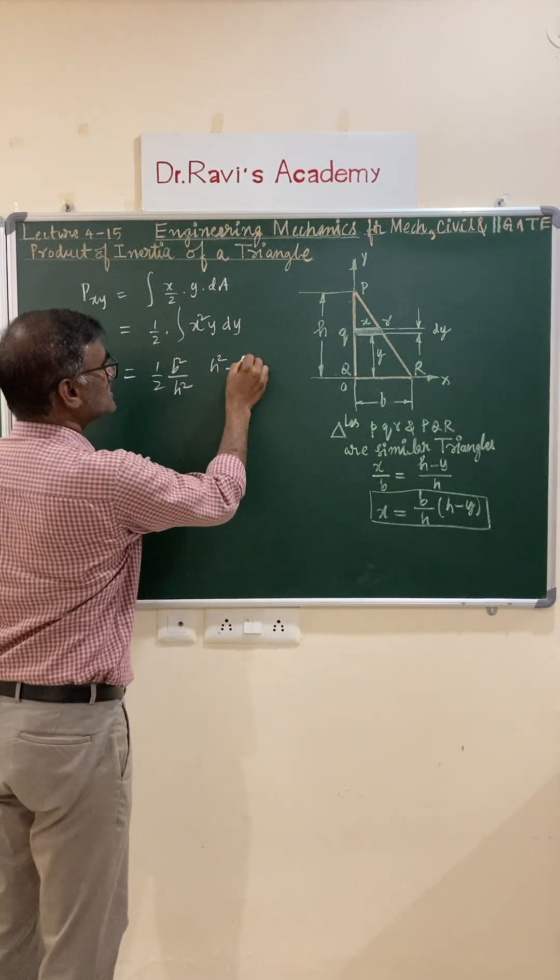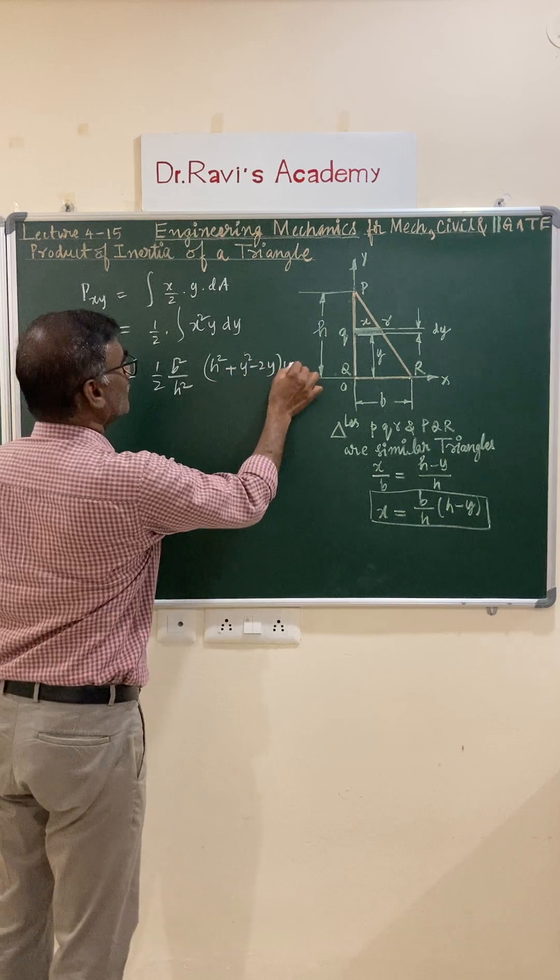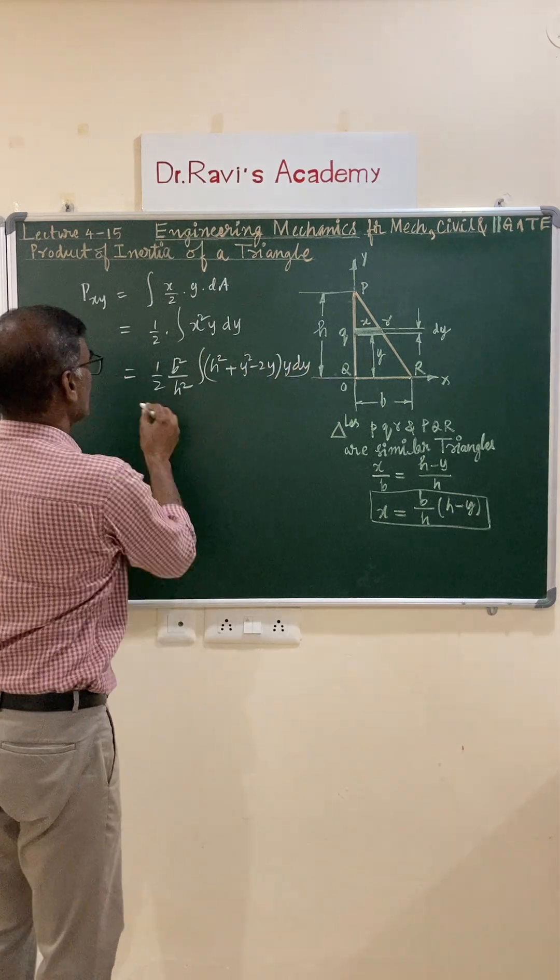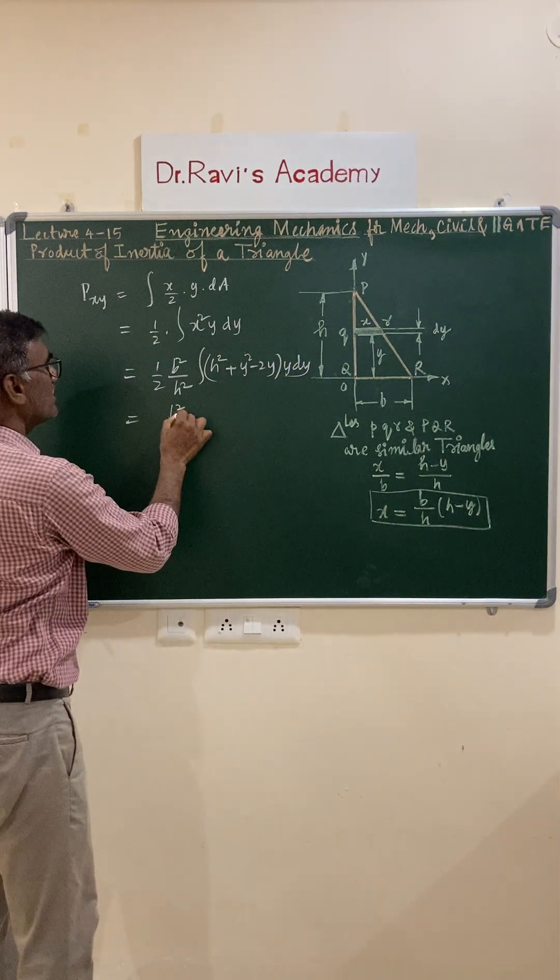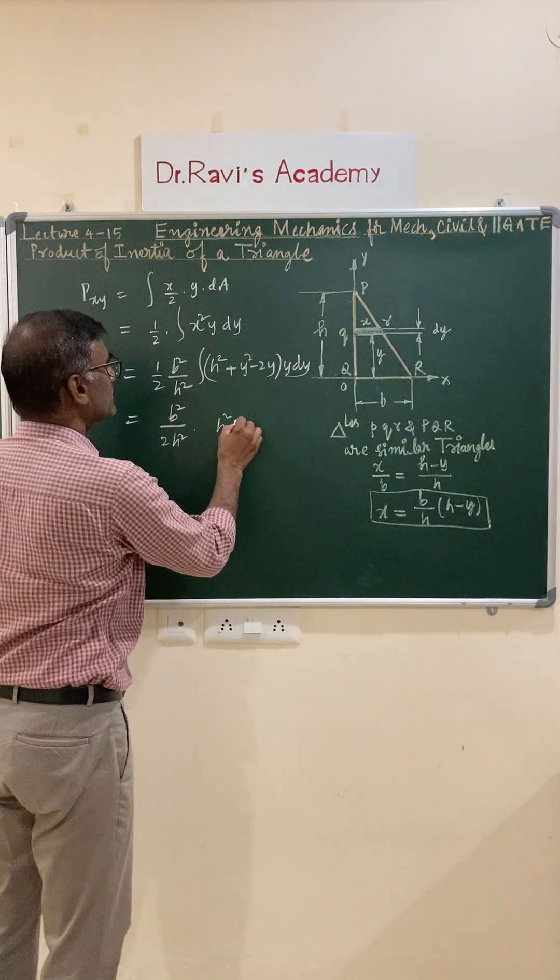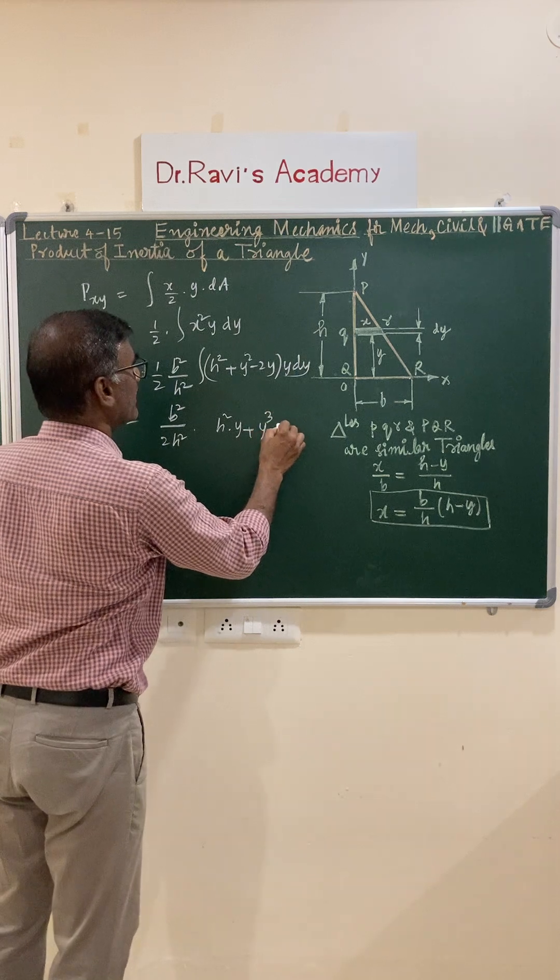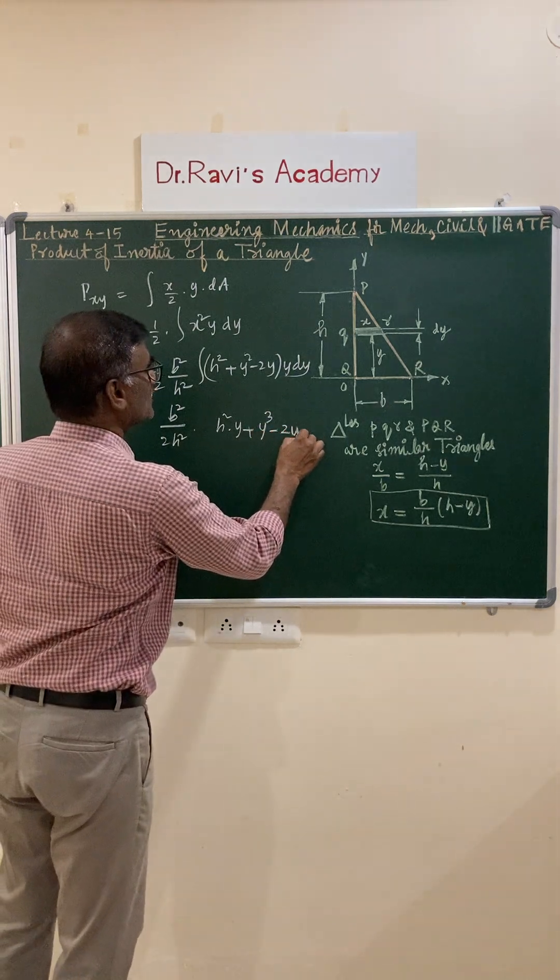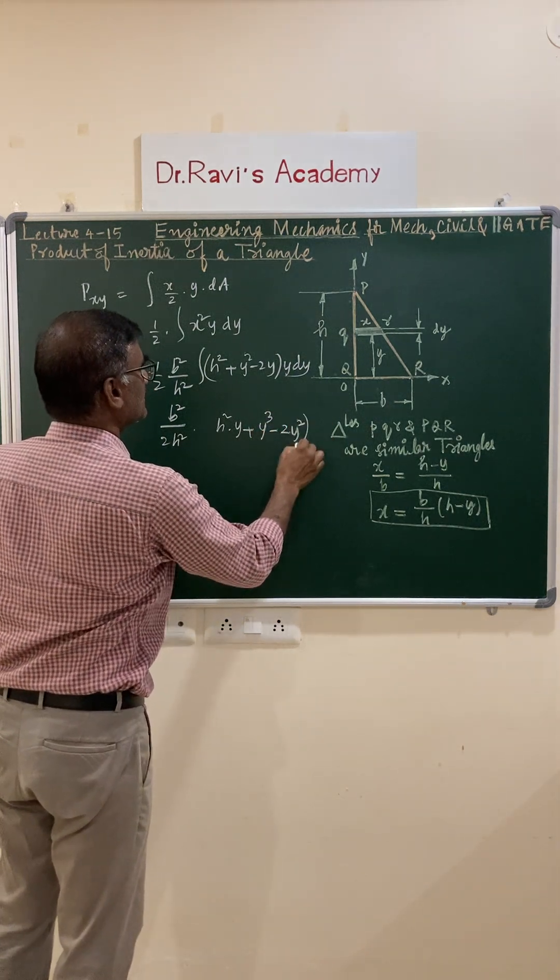You can write down b squared by 2h squared into h squared y plus y cubed minus 2hy squared dy. The expansion is 2hy becomes 2h into y squared dy integral.